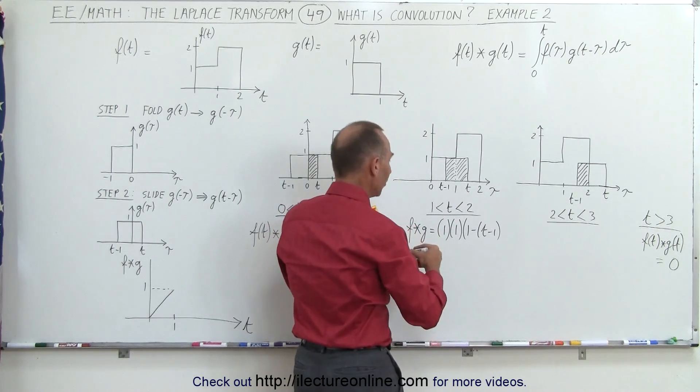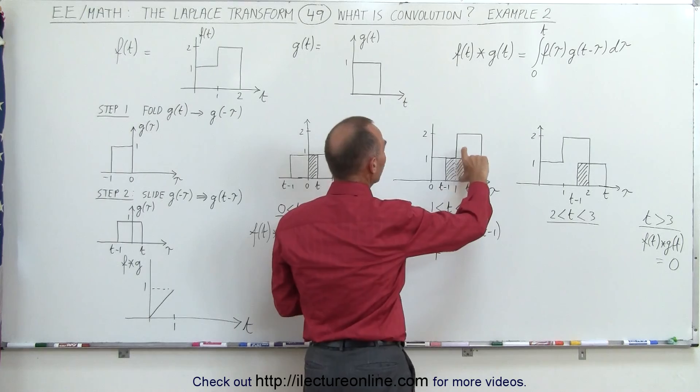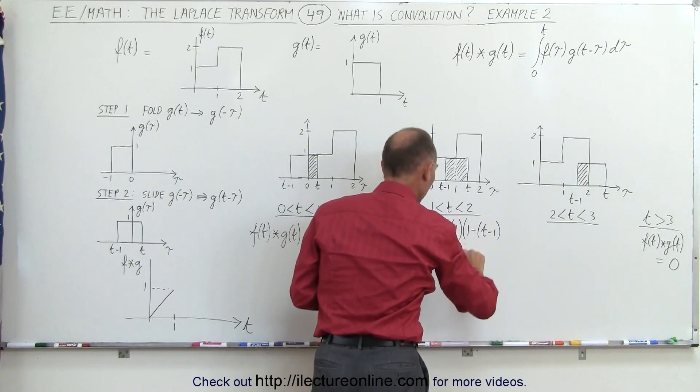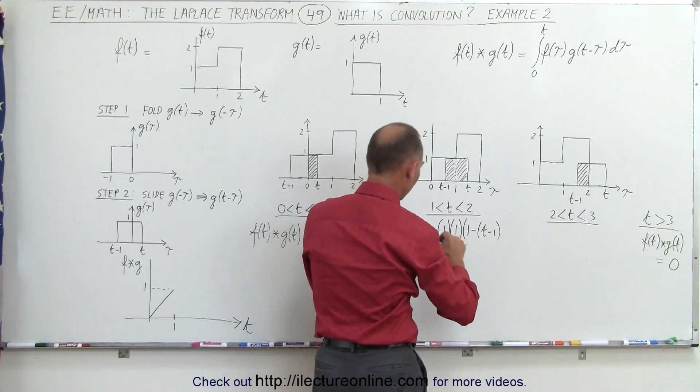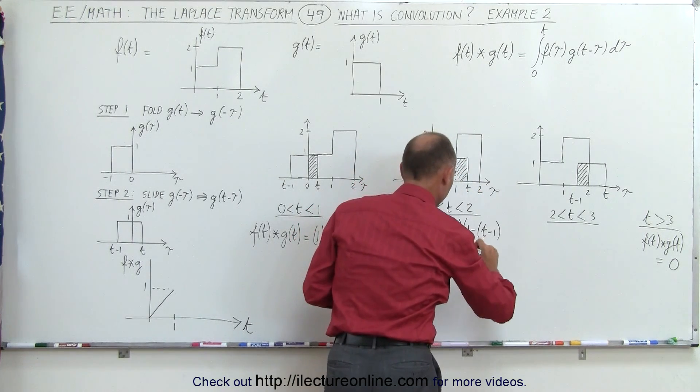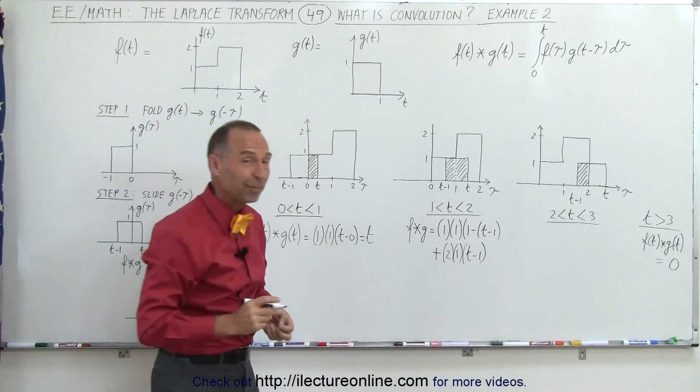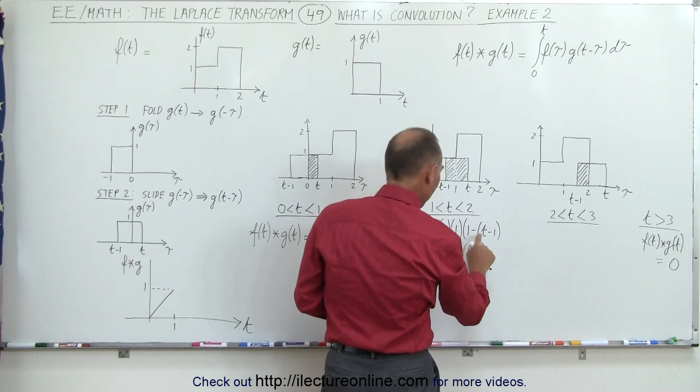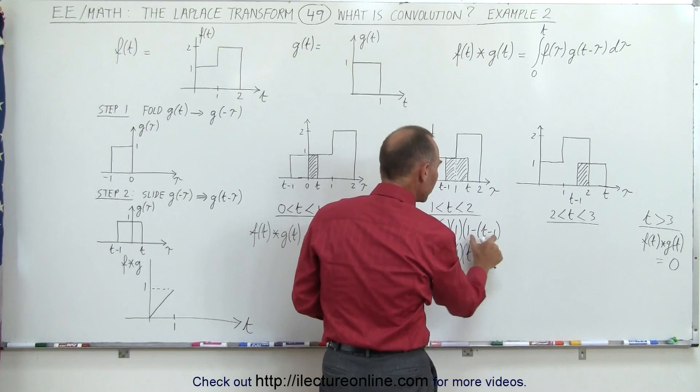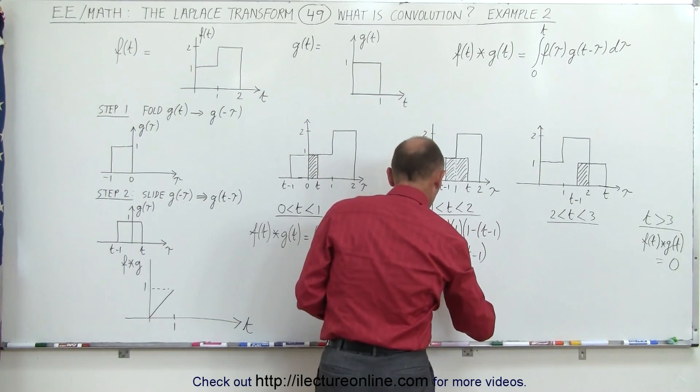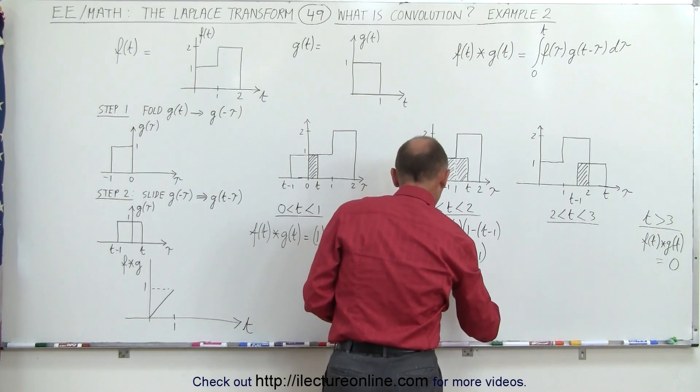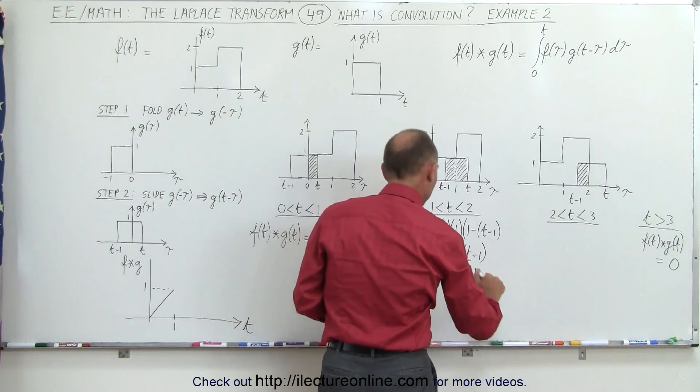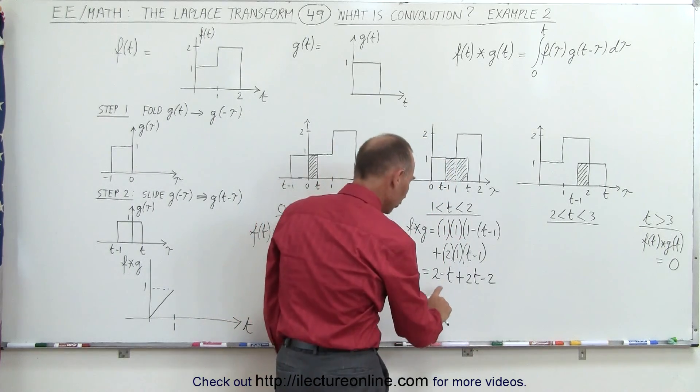And then we have to add to that the second overlap, but here the height of the two functions will be 2 and 1, so we have the height of the second region here is 2 for the first function, 1 for the sliding function, times the overlap, which is going to be t minus 1, like this. Now we simply have to add those together, so that means this is equal to, we have 1 times 1 times 1, which is, we actually have a 1 minus a minus 1, which is 2, so we have 1 times 2, which is 2, and 1 times a minus t, which is minus t, and then here we have plus 2 times t, and 2 times a negative 1, which is negative 2.